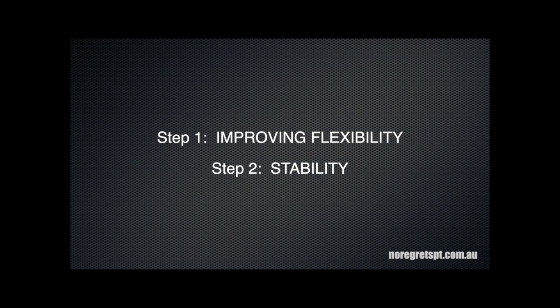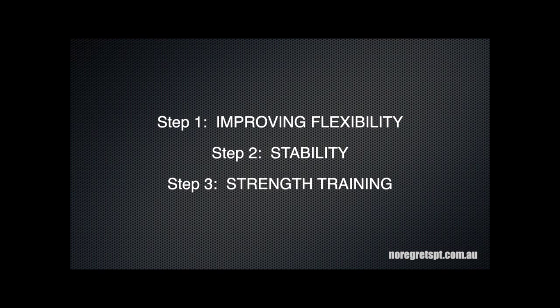The next step is stability. Anytime there's an injury, something is unstable — if there's a tight muscle, there must be a weak one. You must do stability training before strength training because there's no point trying to strengthen something that's unstable. Once you've got optimal flexibility and range of motion with a stable joint, then you start strength training.